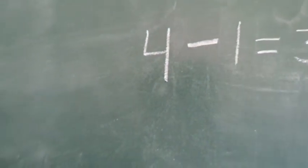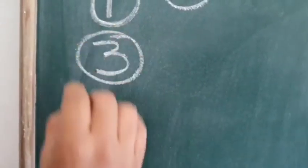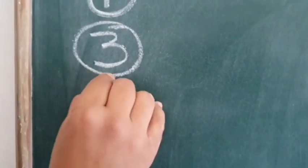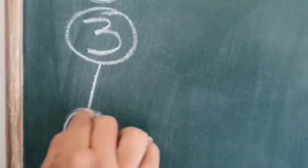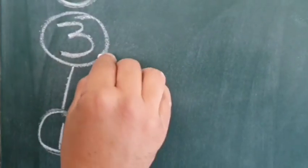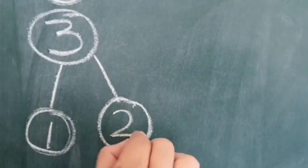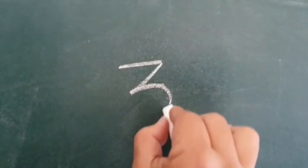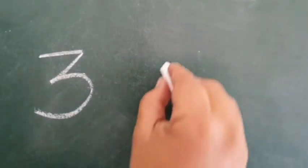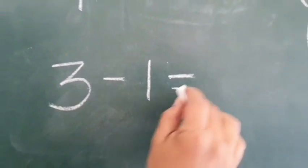Now there were 3 pigeons and 1 pigeon flew away, there were 2 pigeons left behind. 3 pigeons, 1 flew away — 3 minus 1 is equal to 2.